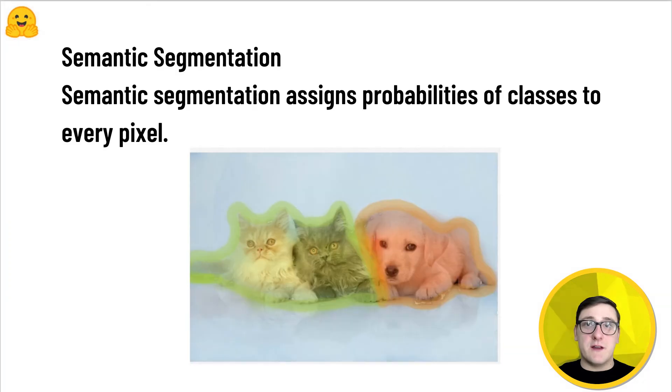Semantic segmentation is the task of segmenting parts of an image together which belong to the same class. Semantic segmentation models assign a probability of a class to each pixel.